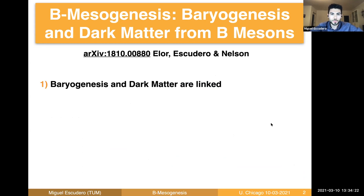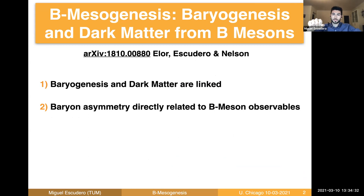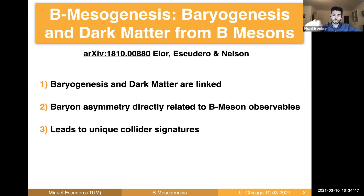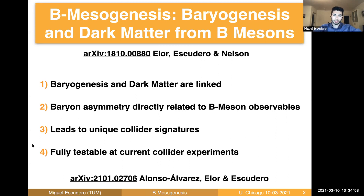The main features of B-mesogenesis are that, first, baryogenesis and dark matter are linked. Within this mechanism, the baryon asymmetry of the universe is directly related to B-mesogenesis observables at collider experiments. If this mechanism is at play in the early universe, it will lead to unique collider signatures, and it's precisely because of these unique collider signatures that we expect the mechanism to be fully testable at current collider experiments. These two last points are what we look at in detail in this reference from two months ago.